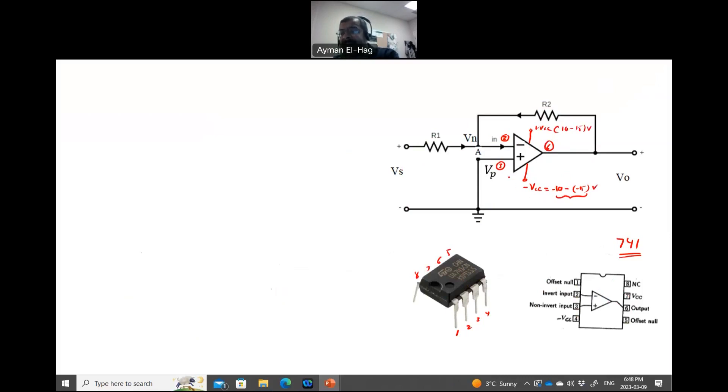So these are the 5 pins that we connect them. Now there are pin number 1, offset null, pin number 5, offset null. This is for some more advanced topics, we will not cover it in this series. And NC is no connection. There is no connection in number 8. So this is how this op-amp will be in reality connected. And these are the pins.